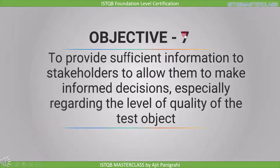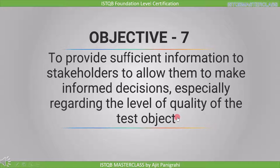The seventh objective is to provide sufficient information to stakeholders to allow them to make informed decisions, especially regarding the level of quality of the test object. When we find defects, it is not necessary that we fix all of them before release. Instead, we provide sufficient information to the stakeholder so that they can make decisions based on the defects and the risks associated with them.